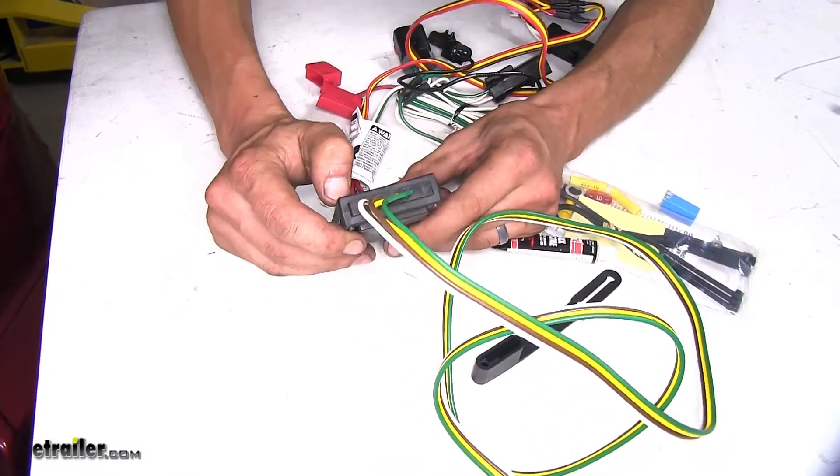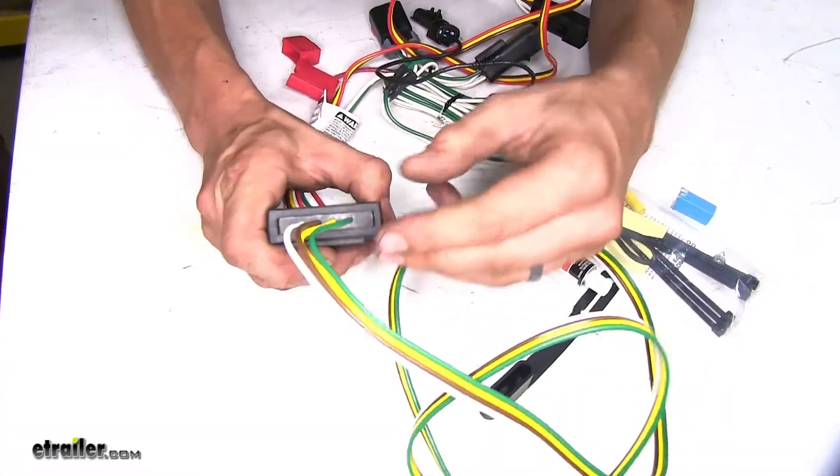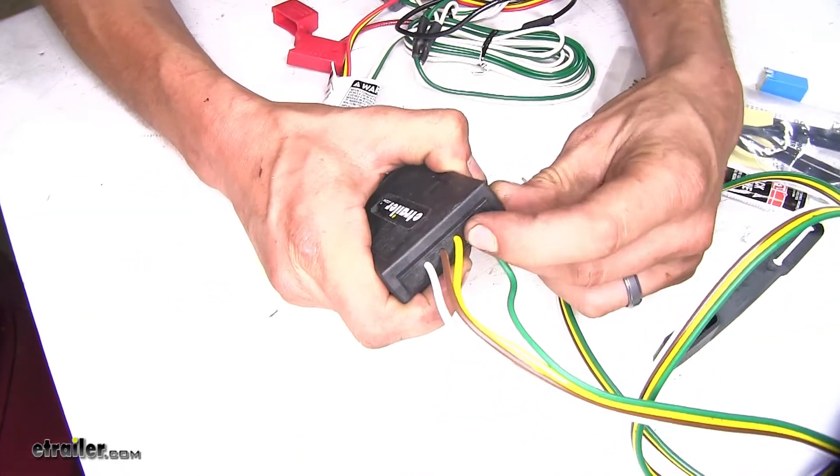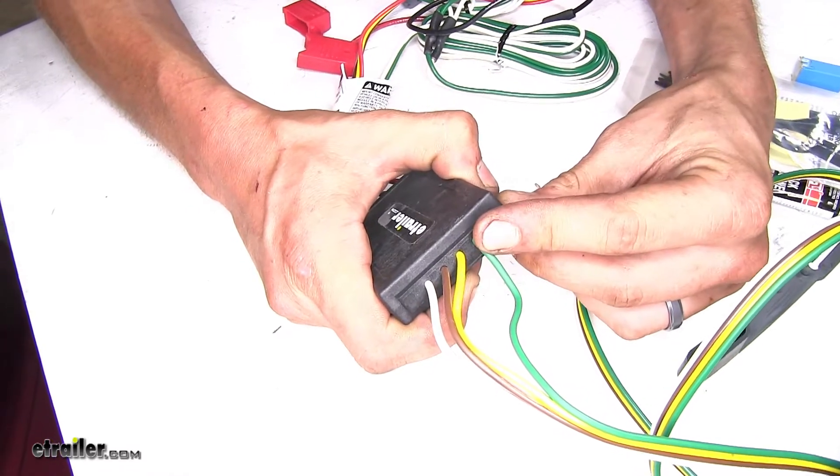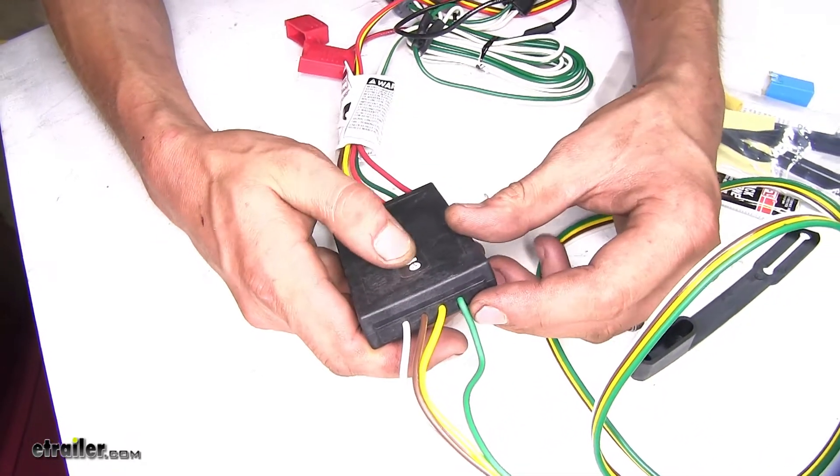Now, in our Curt wiring harness, our box isn't quite as well sealed. You can see where the wires go in. You can actually see a little bit of gap around there. So there's a potential that moisture and dirt or even just humidity can get inside there and potentially cause corrosion.